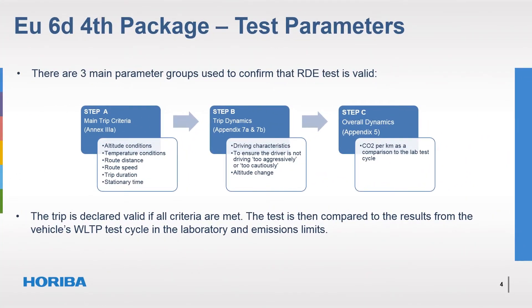The RDE trip validity is assessed in three steps. Step A confirms that the primary requirements of the route, environmental conditions, and driving speed are within the set criteria. Step B confirms that the driver behaviour conformed to normal expectations, neither being too passive nor too aggressive. Step C confirms the overall vehicle performance by comparing the CO2 emissions in the RDE test to those of the WLTC in the chassis laboratory. The trip is declared valid if all criteria are met.